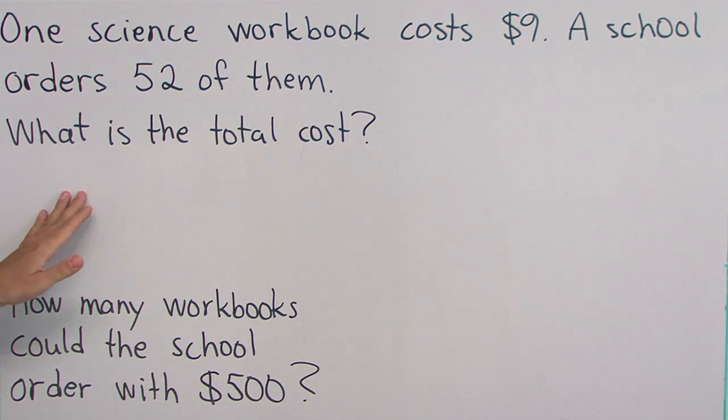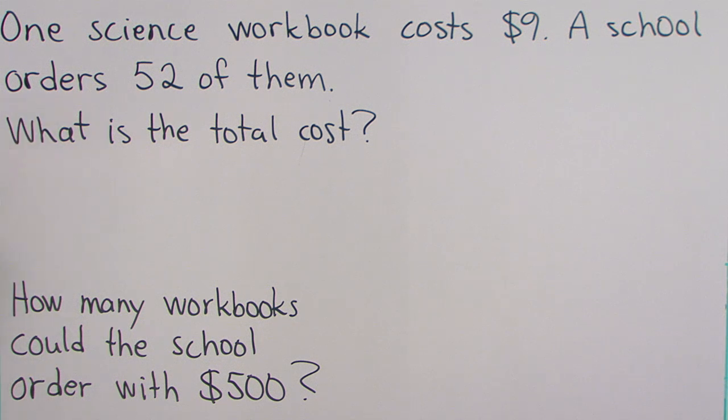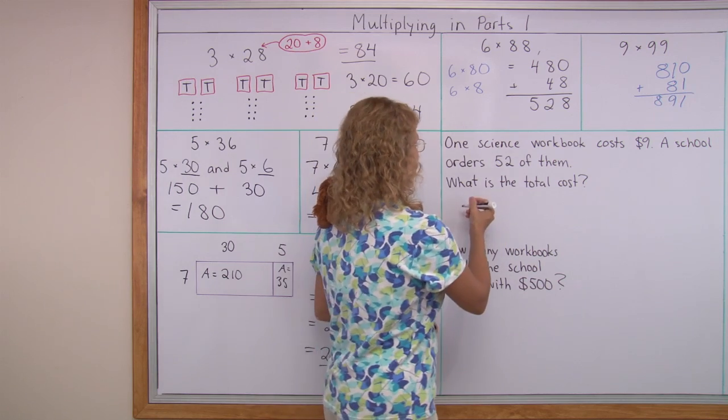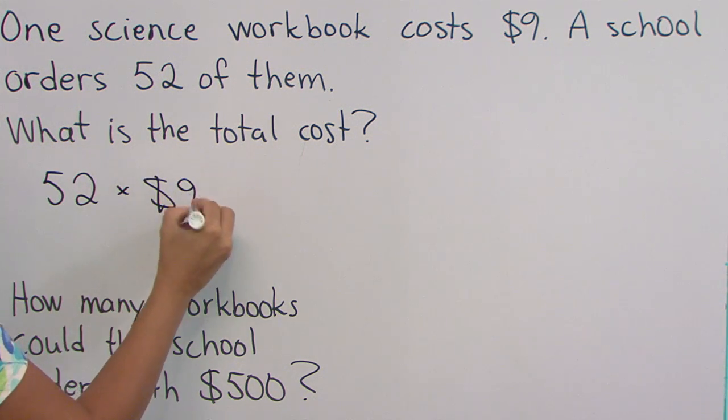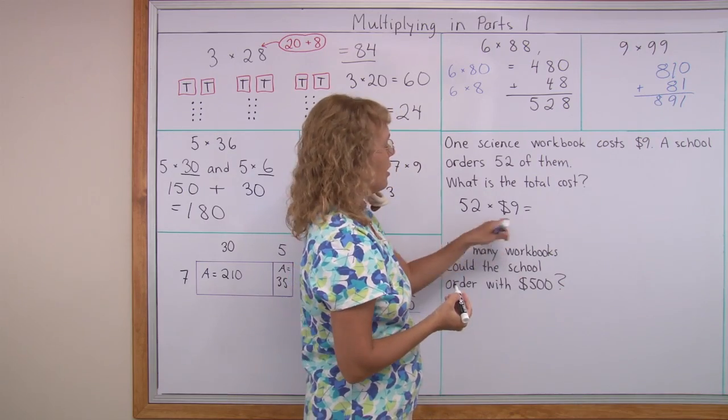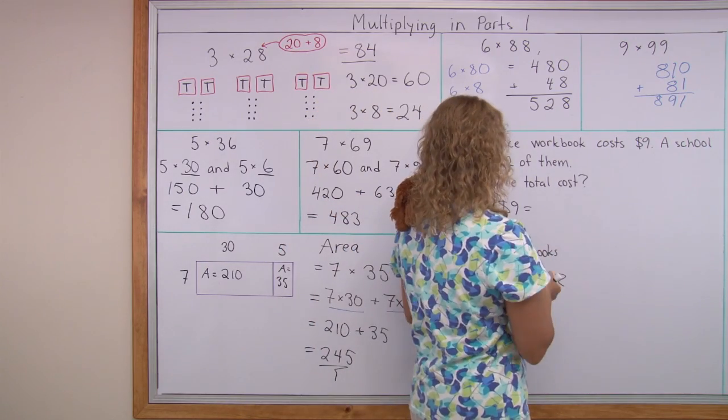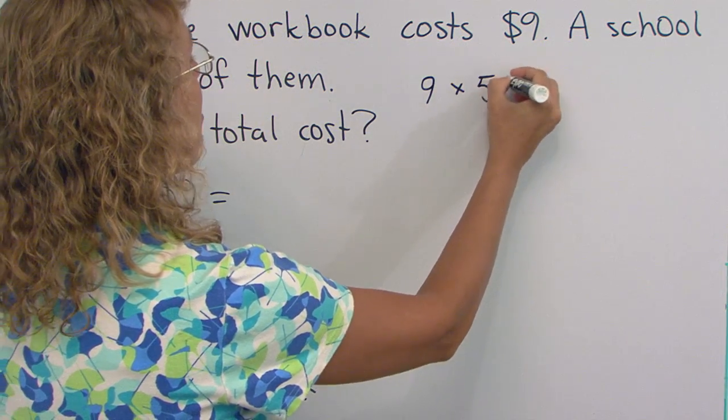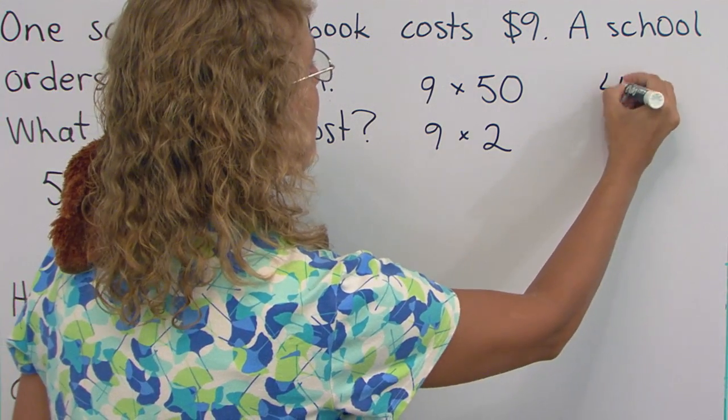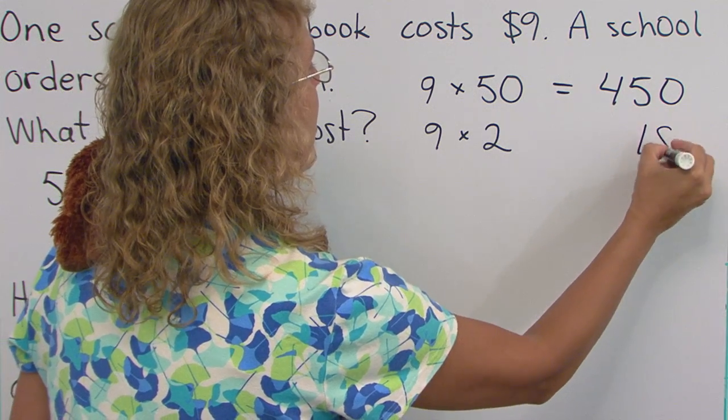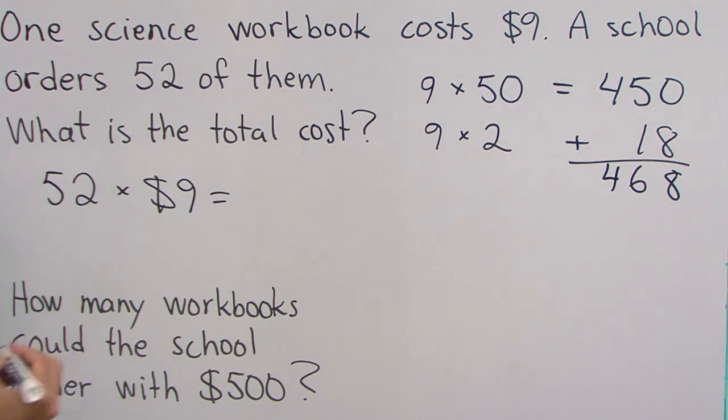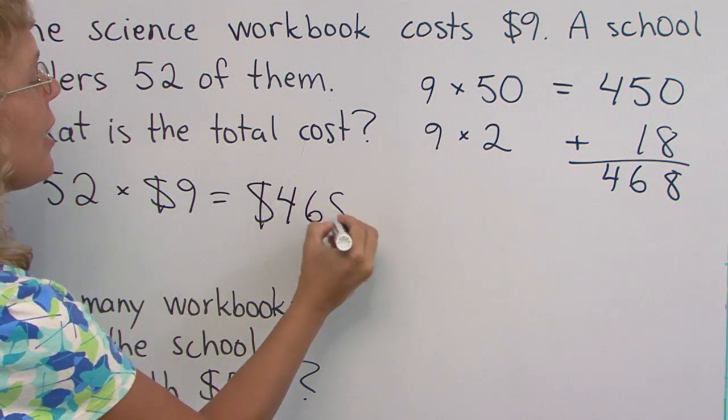Lastly, a word problem. One science workbook costs $9. A school orders 52 of them. What is the total cost? To do this we need to multiply 52 times $9, which is 9 times 52. I'm going to do it over here, thinking of 52 as 50 plus 2. We would get 9 times 50 and 9 times 2, which is 450 and 18. And then add. So the cost is $468.